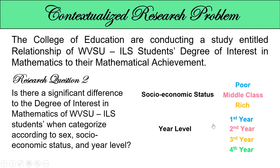Let's have the contextual research problem, specifically research question number two. We already answered when the group is categorized according to sex using t-test for independent sampling. Now let's have two tests if there are significant differences in the degree of interest in mathematics of BEVSU ILS students when categorized according to socioeconomic status and year level. There are three groups in socioeconomic status: poor, middle class, and rich. For year level, we have four groups: first year, second year, third year, and fourth year. So, what is the statistical test needed to find a significant difference for three or more groups?